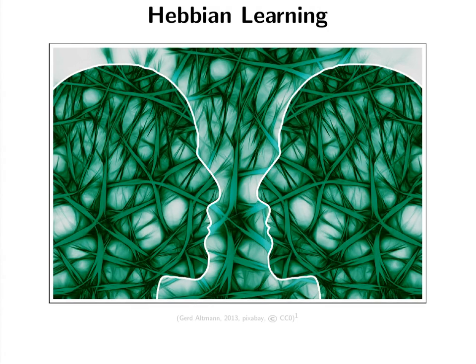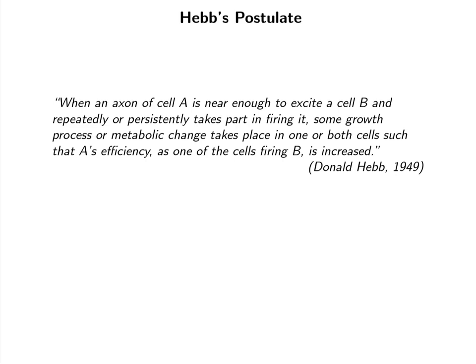Donald Hebb was a psychologist who thought about how psychological processes could be realized in the neural substrate of the brain. His key idea was: when an axon of cell A is near enough to excite cell B and repeatedly takes part in firing it, some growth process or metabolic change takes place such that A's efficiency as one of the cells firing B is increased. This is known as the Hebb postulate, abbreviated as 'fire together, wire together.'